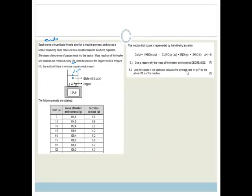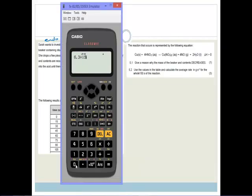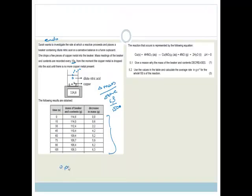Now it says use the values in the table and calculate the average rate in grams per second for the whole 150 seconds of the reaction. To work out your average rate, you look at the change in mass over the change in time. The total decrease in mass is 6.3, so that's 6.3, and the total time is 150 seconds. All we have to do is plop this 6.3 divided by 150 into the calculator. That gives us 0.042. So the change is 0.042 grams per second. That is the average rate at which this is losing mass.